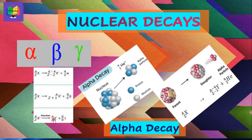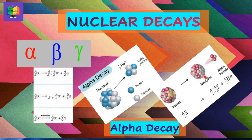Now, individually, we will study some examples of each type of decay. In alpha decay, for example, a nucleus X decays into another element, which we denote by Y, with the emission of alpha particles.